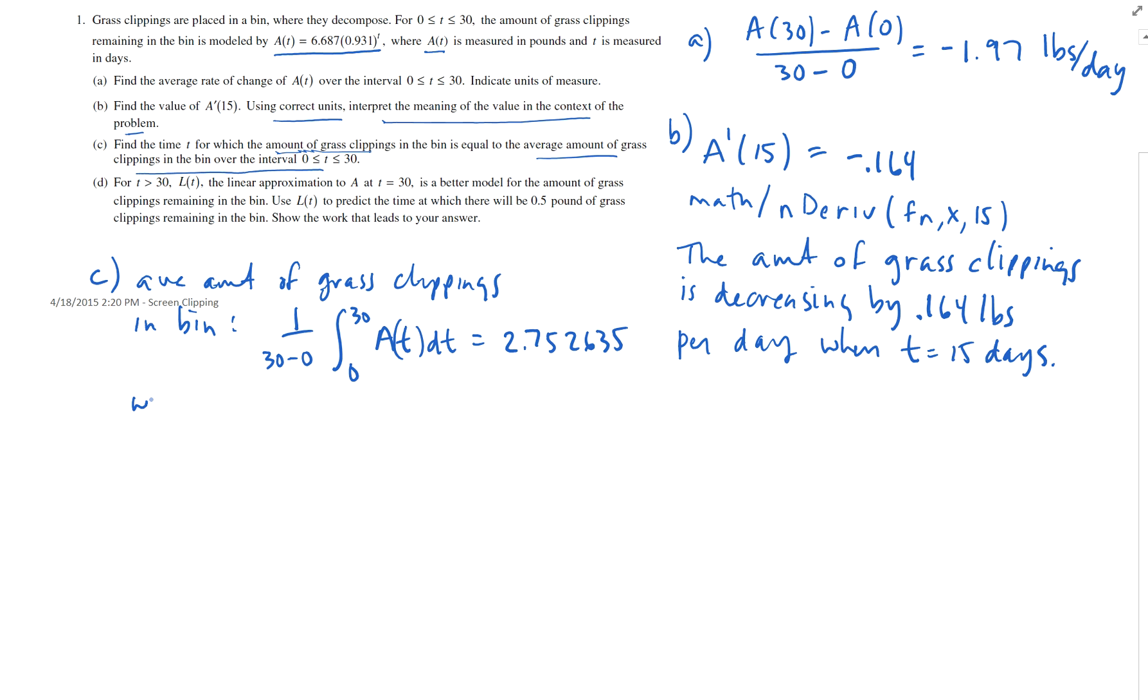Now the question is asking, find the time at which the amount of grass clippings is equal to this. So the question is saying, when is the amount of grass clippings, A of t, which is 6.687 times .931 to the t, equal to 2.752635. So the question is, how do you solve that equation?